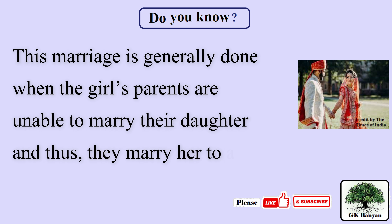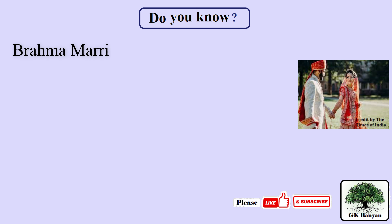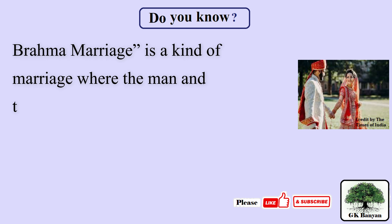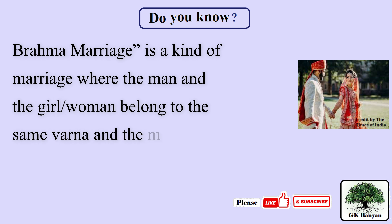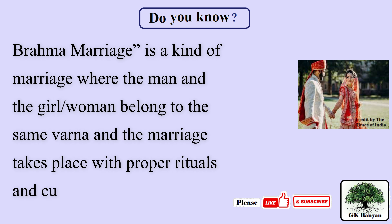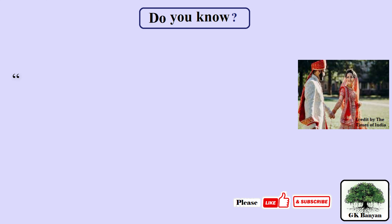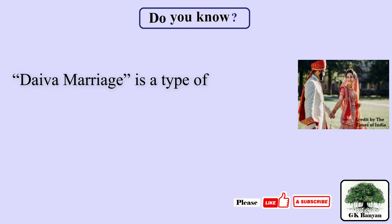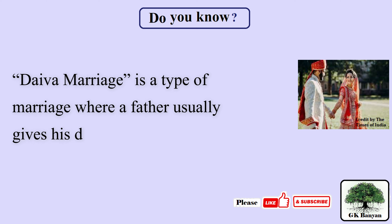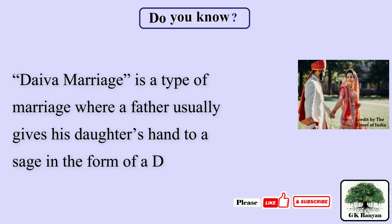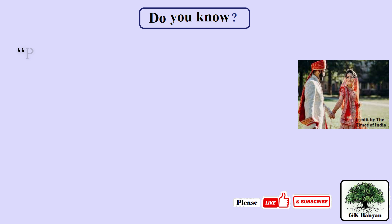Brahma marriage is a kind of marriage where the man and the woman belong to the same varna and the marriage takes place with proper rituals and customs. Deva marriage is a type of marriage where a father usually gives his daughter's hand to a sage in the form of Dakshina.